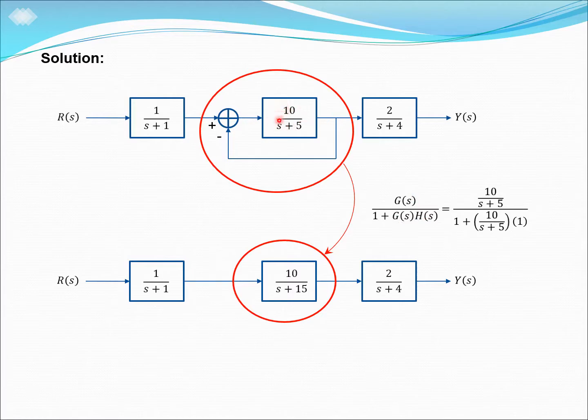Where this is our gs divided by 1 plus gs multiplied with hs. Since our closed loop is a unity closed loop, hs is equal to 1. So by solving this equation over here, then we will get 10 over s plus 15.